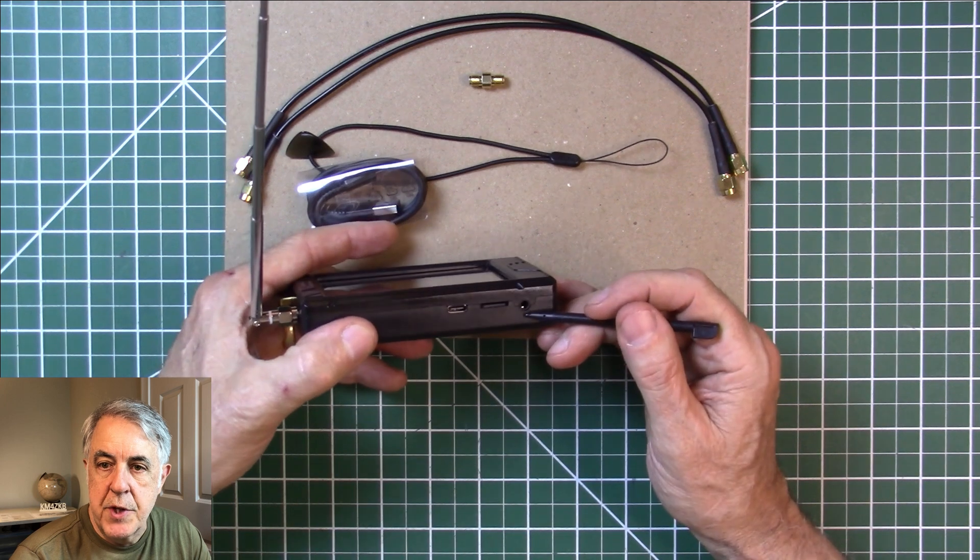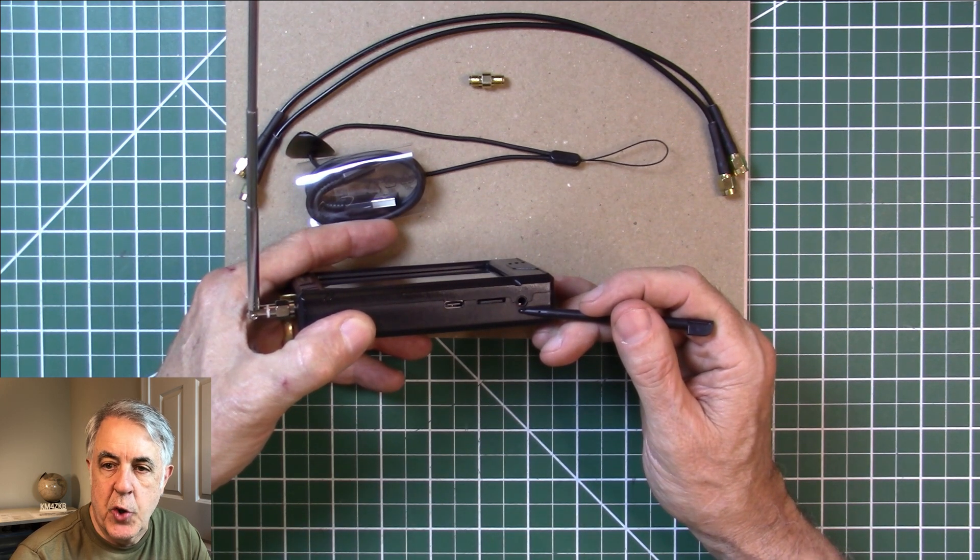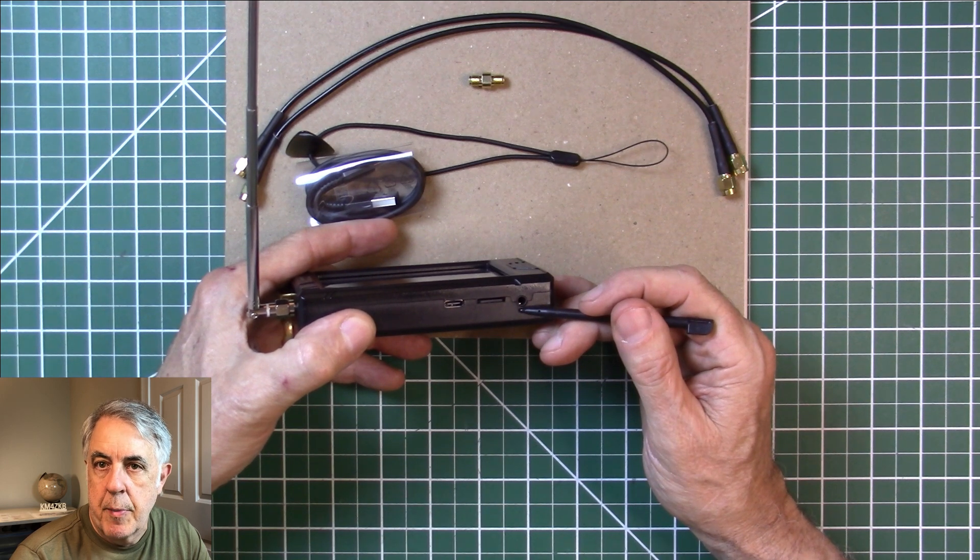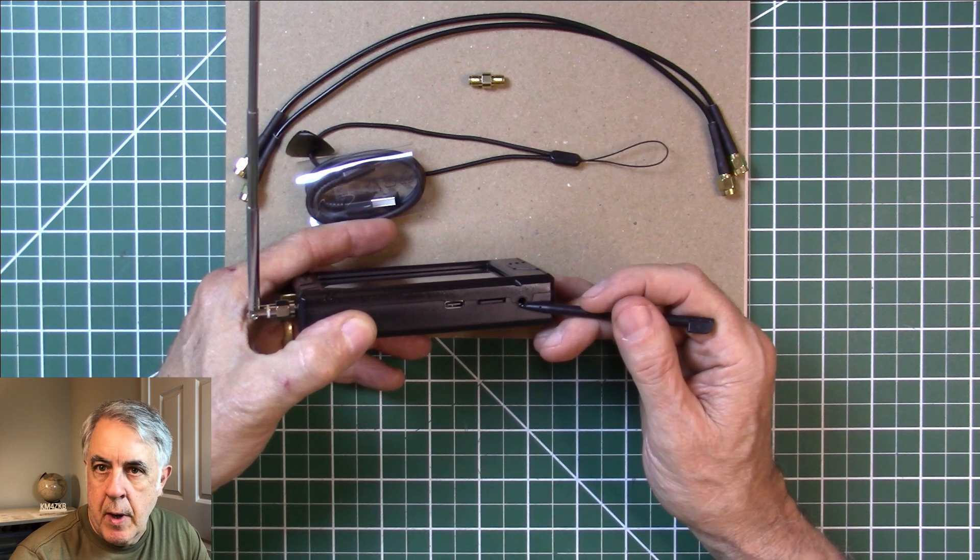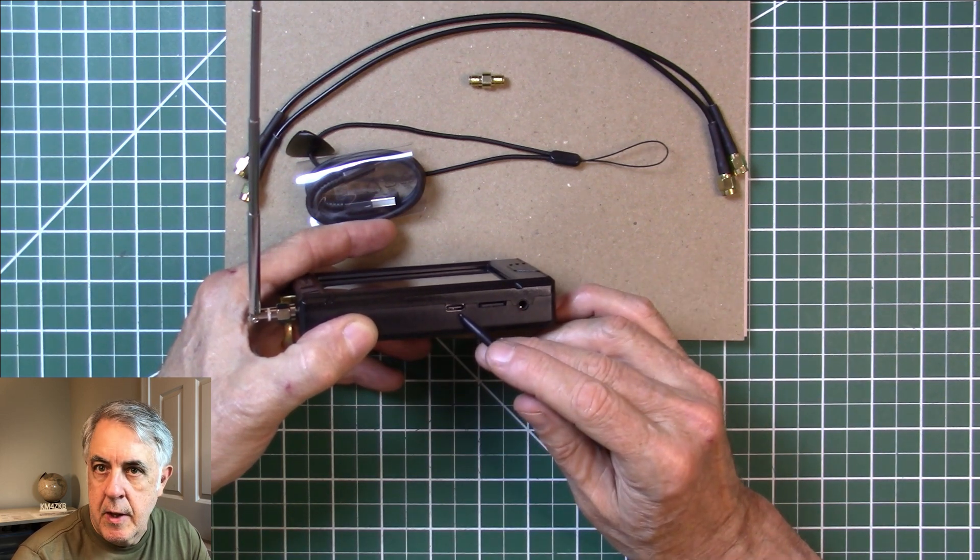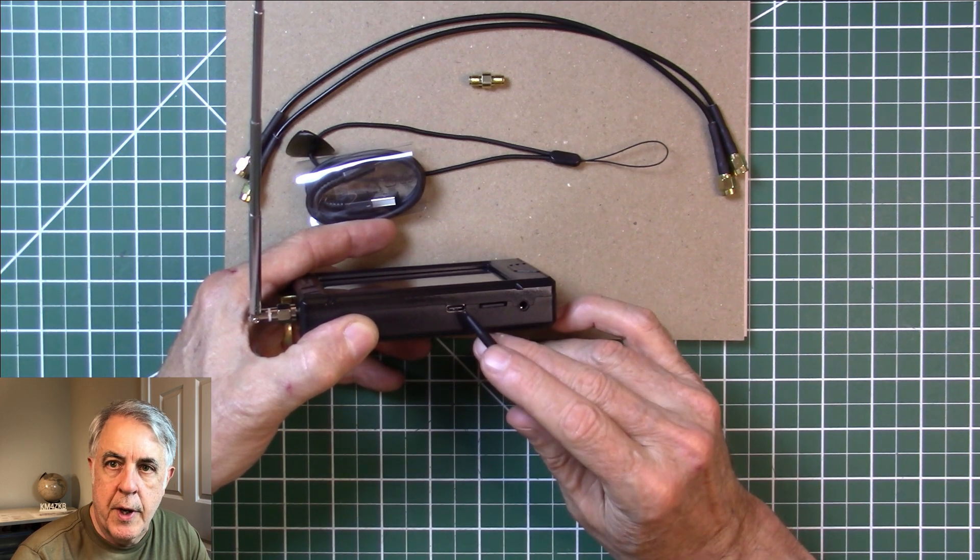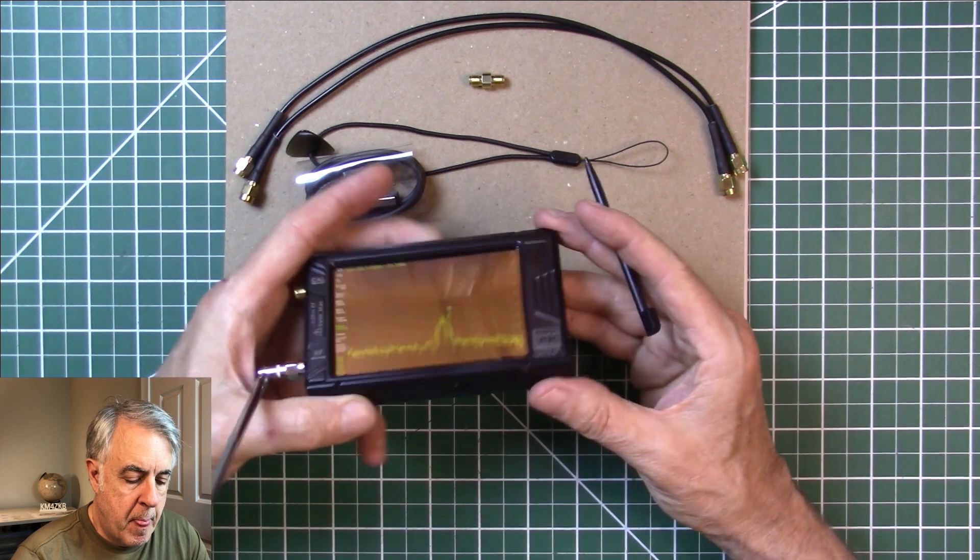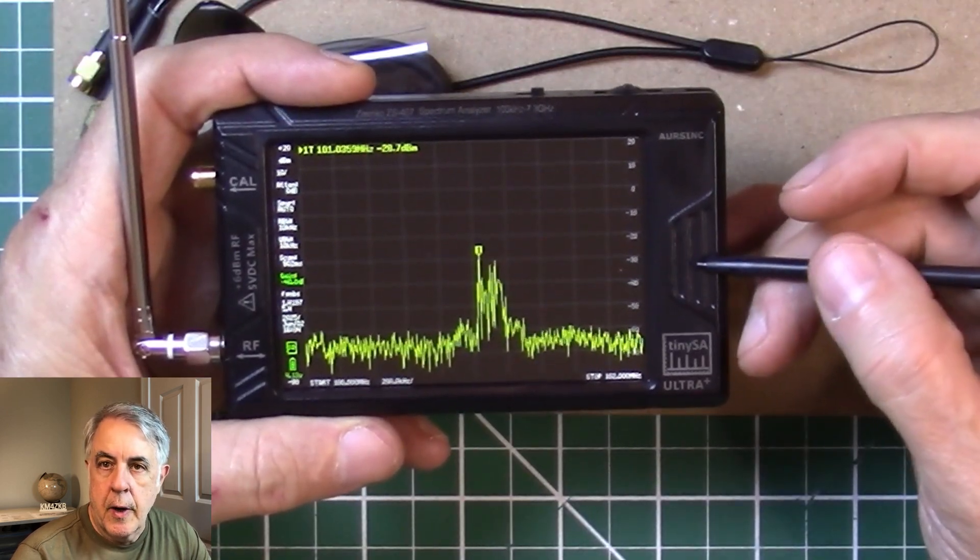It has a headphone jack. The headphone jack here will demodulate AM signals. So if you want to monitor something that you see on your spectrum analyzer, it will demodulate if it's an AM signal. This is the USB-C connector. This is where you charge it, and this is also where you connect it to your PC.